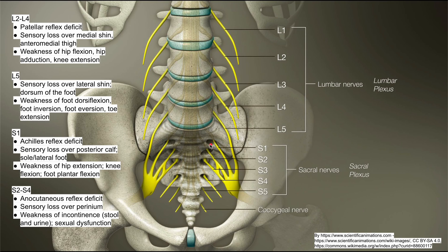This is a short video on lumbosacral radiculopathy. This is a pain syndrome caused by compression of nerves in your lower back. There's the lumbar plexus and the sacral plexus that both come out of your lower spine. Compression of these nerves can cause different kinds of reflex deficits, sensory loss, and weakness of your lower limbs. This video will help you differentiate between these disorders and identify which nerves are being compressed.